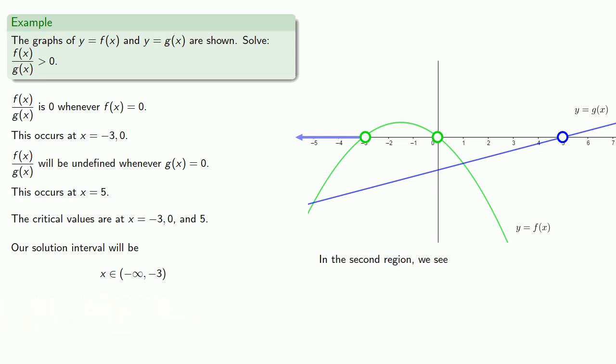We have this second interval which runs between negative three and zero. In the second region, we see that y equals f of x is above the axis. So f of x is positive. g of x is negative. And so the quotient will be negative. And this second interval is not going to be part of the solution set.